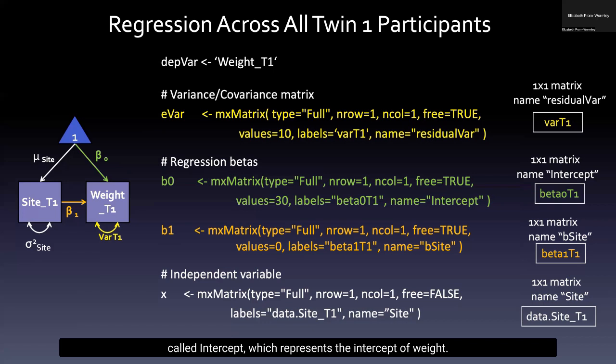The one cell in the one by one matrix residual bar has an internal label of var T1. The R object B0 contains the matrix called intercept, which represents the intercept of weight. This matrix has one row and one column. The R object B1 contains the matrix called B site, which represents the influence of site on weight. This matrix has one row and one column. The cell of this matrix is labeled as beta 1 T1. The R object X contains the matrix called site, which represents the observed value of site for each observation. The cell of this matrix is labeled as data dot site underscore T1.